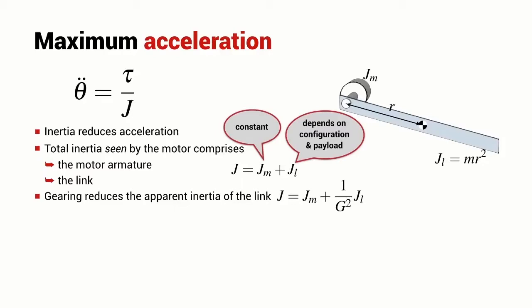So, the link inertia is going to be greatly reduced and it means that the inertia that the motor control system is going to see is dominated by the constant motor armature inertia. Variation in inertia due to link configuration change is going to be very, very small.